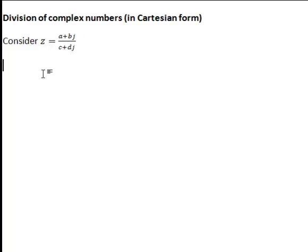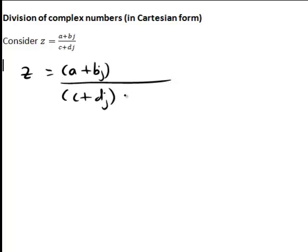So here we have z equals a plus bj divided by c plus dj. So what is the complex conjugate of c plus dj?